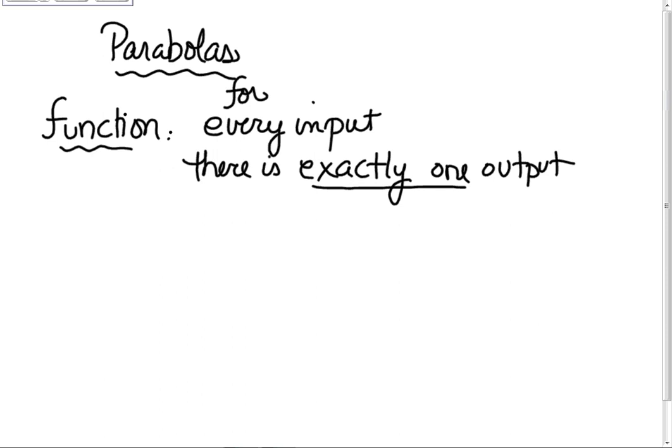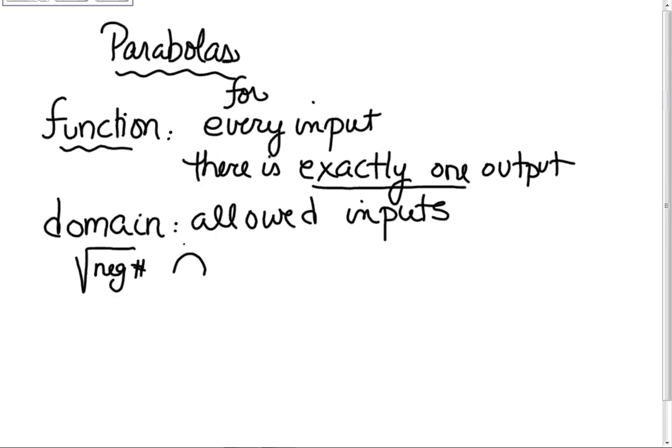What's a domain? Now these are the allowed x values, allowed inputs. I shouldn't have said x's, I apologize, because you could be talking about your position as a function of time. Where are you at 8 o'clock in the morning? Your input is the time. Can time be negative? Well it depends on how you look at it. If you want to look at where was I 8 hours ago, then time would be negative relative to today. So these are your allowed inputs. Can you square root a negative number? No. Okay, ready? So the domain is what you put in and the range is what you get out.